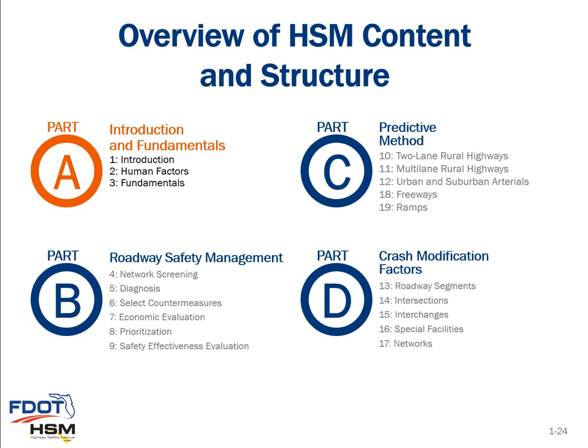The Highway Safety Manual is divided into four parts, each with its own objectives and topics, and has a total of 19 chapters. Today's webinar is focused on the fundamentals found in Part A. Part B is Roadway Safety Management. Part C is the Predictive Method, with five different predictive chapters. And Part D is Crash Modification Factors. We will cover each of these parts through this webinar series.